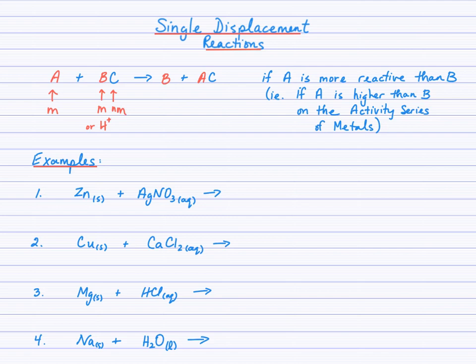So first it matters to notice what the element is in the reactants. Is that element a metal? And if it is, then that metal, A in this general formula, is going to replace the metal or the cation in BC. Now that's usually a metal ion, but sometimes it could be the hydrogen ion. So if A is more reactive than B, then it will displace B, and that will put B on its own, and A forms an ionic compound with C. These products form only if A is more reactive than B. So you have to check the activity series of metals on your test reference sheet or in the textbook to determine if this reaction occurs.